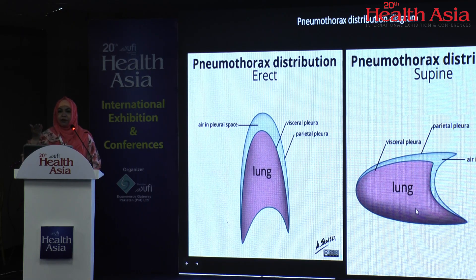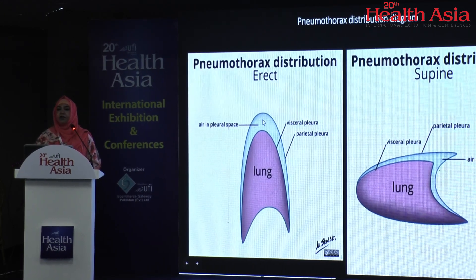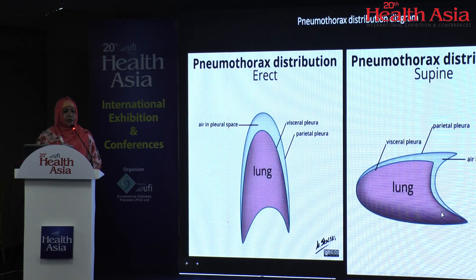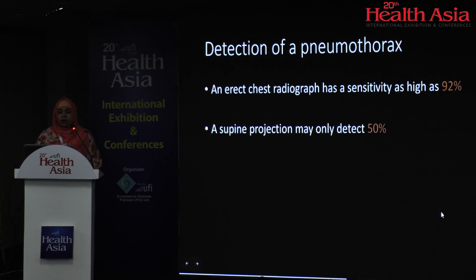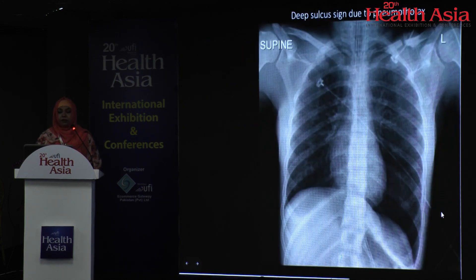Air tends to rise because it is very light. In an erect position it will rise in the apices. While the patient is lying supine, the most non-dependent portion is the anterior and inferior area — that is where you want to look for free air. The sensitivity of an erect radiograph to diagnose pneumothorax is 92%, while that of a supine radiograph is only 50%. So you have to be extra vigilant when looking at supine radiographs.